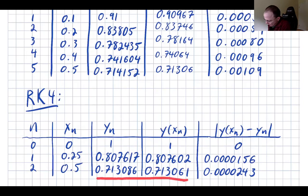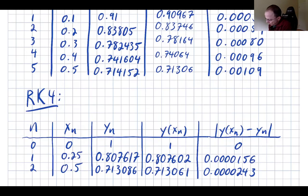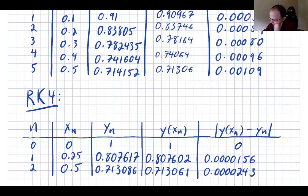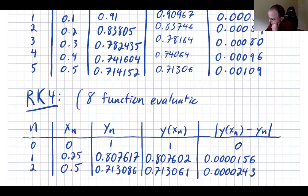Look at the accuracy. With RK4 we have 7130 — four correct digits — whereas the improved Euler method only had two correct digits of the true answer. You can see it in the error: improved Euler has two zeros in the error, but RK4 has four zeros. And this is quite amazing considering how much work it was — only four function evaluations per iteration, eight total.